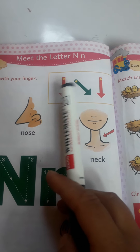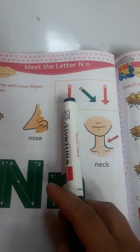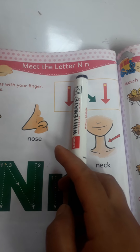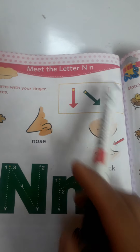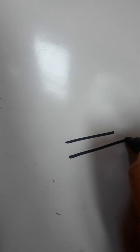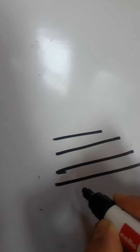Our topic is the letter N. Look here, dear students — here is given a capital N and here is given a small n. Look at this board. I will draw four lines here: first line, second, third, and the fourth one.